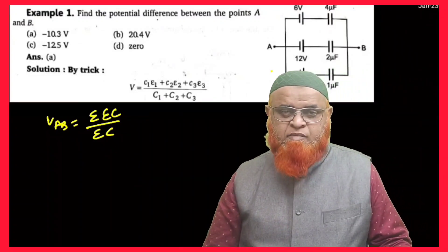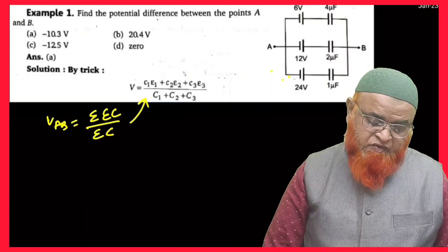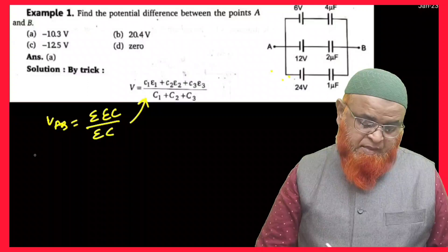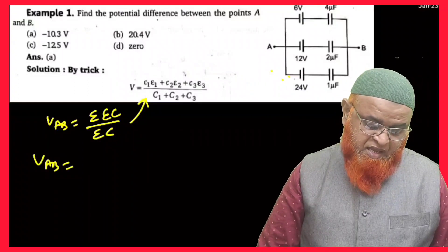EC is nothing but EMF, C is nothing but capacitors. So if you expand, you will get this formula which is given in the question itself. So by just substituting the values, VAB is...